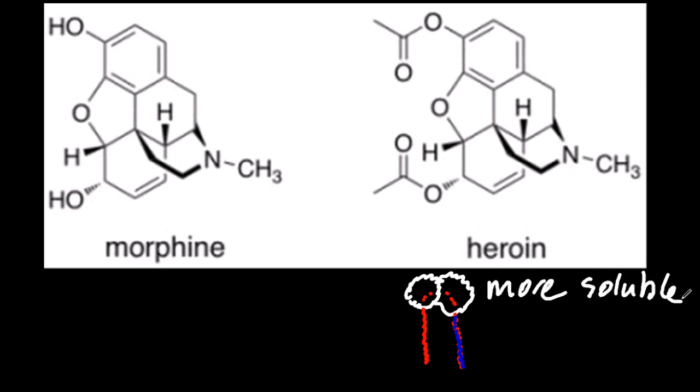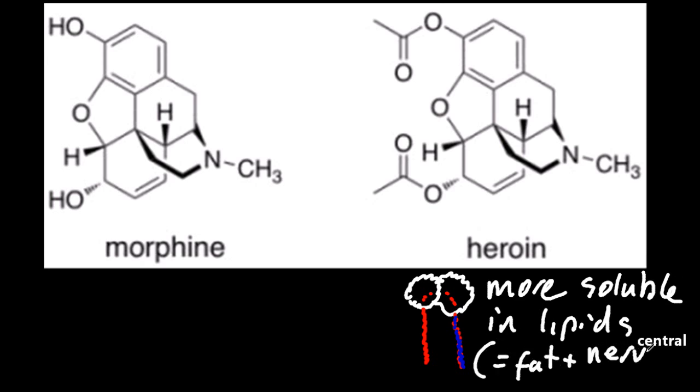Also, since heroin is more soluble in fats and the central nervous system, it's going to have more effects there as well, compared to morphine.